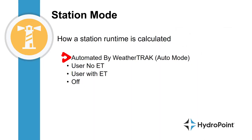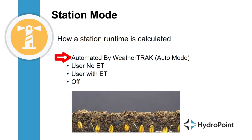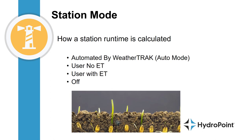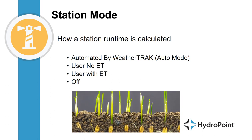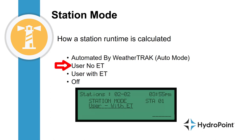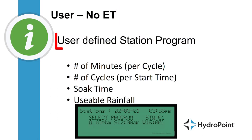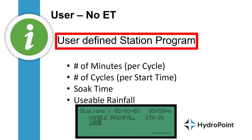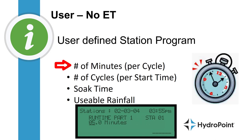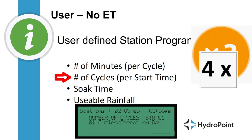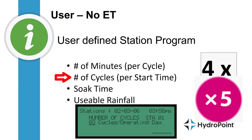Maintaining a healthy landscape requires a different type of irrigation schedule than is required for planting new landscapes or sprouting new seeds like we do in overseeding. For this, we'll set a station's station mode to user no ET. When you switch a station to user no ET, you switch it to a user-defined station program, where you the user define how many minutes per cycle and how many cycles per start time your station will irrigate.